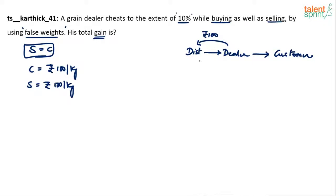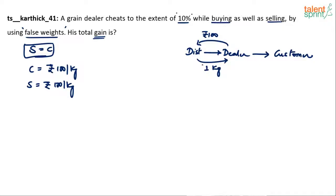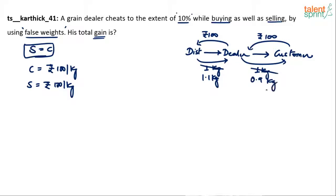He pays 100 rupees and is supposed to get 1 kg, but instead he gets 1.1 kg using false weights. Now a customer comes to him and says, 'I'll pay you 100 rupees, I want 1 kg of that item.' The dealer is supposed to give 1 kg, but instead of 1 kg he gives only 0.9 kg.